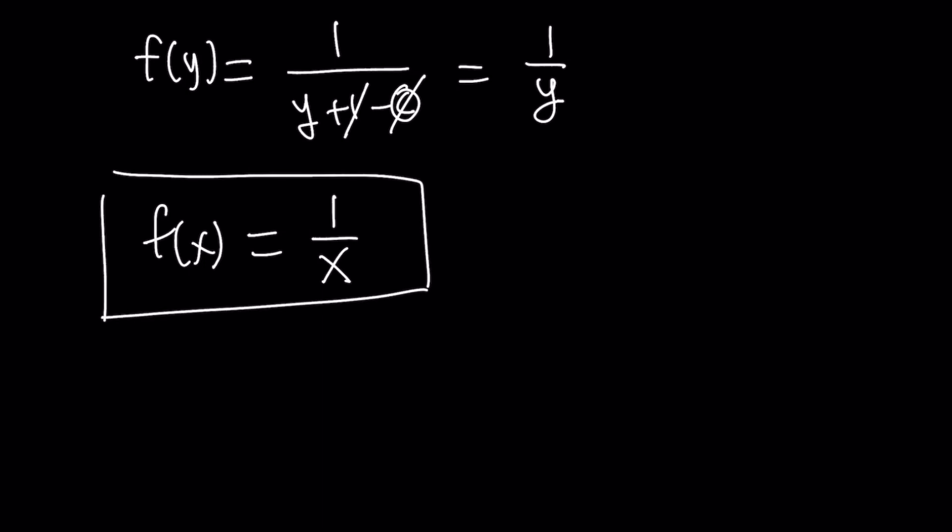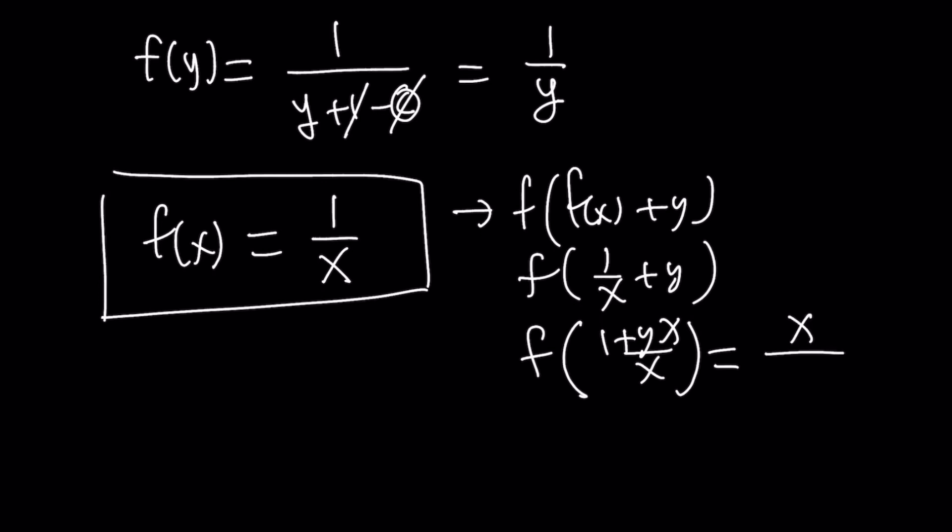Now, you can go ahead and test it out. That's actually how I came up with this problem. You can go ahead and just replace it. f of f of x plus y. Replace f of x with 1 over x. Then you're going to get the following. And then that's going to give you f of 1 plus yx over x. And remember, f is the reciprocal function. So it's just going to flip it. And you're going to get x over 1 plus yx, or 1 plus xy from here, which checks with the original equation.